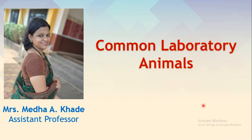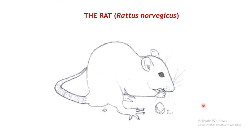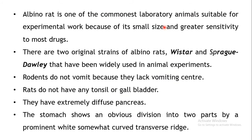In this video we shall consider some of the commonly used laboratory animals. We shall briefly cover the characteristic features of these animals as they are used as experimental animals. The first animal is the rat; the species name is Rattus norvegicus.